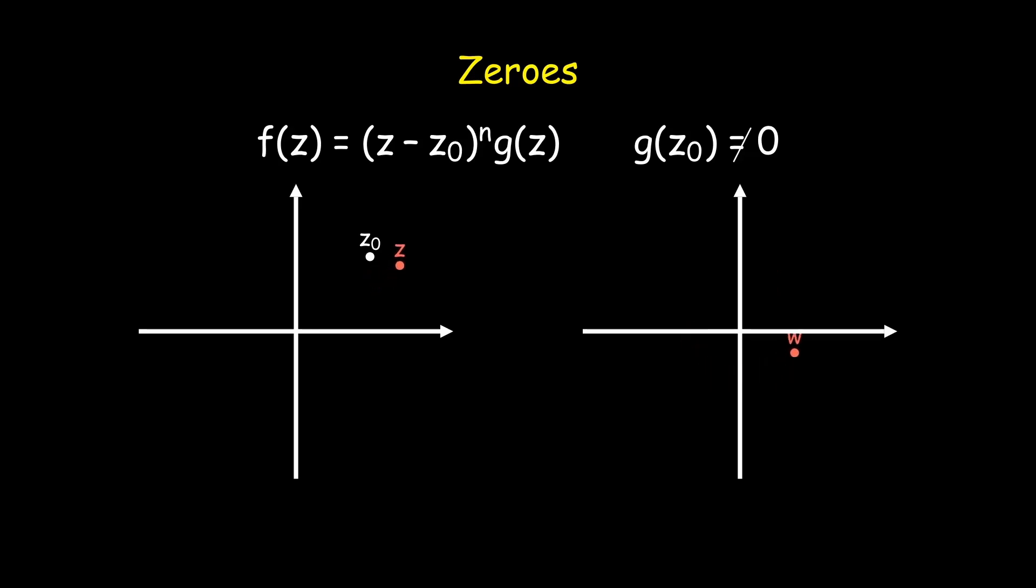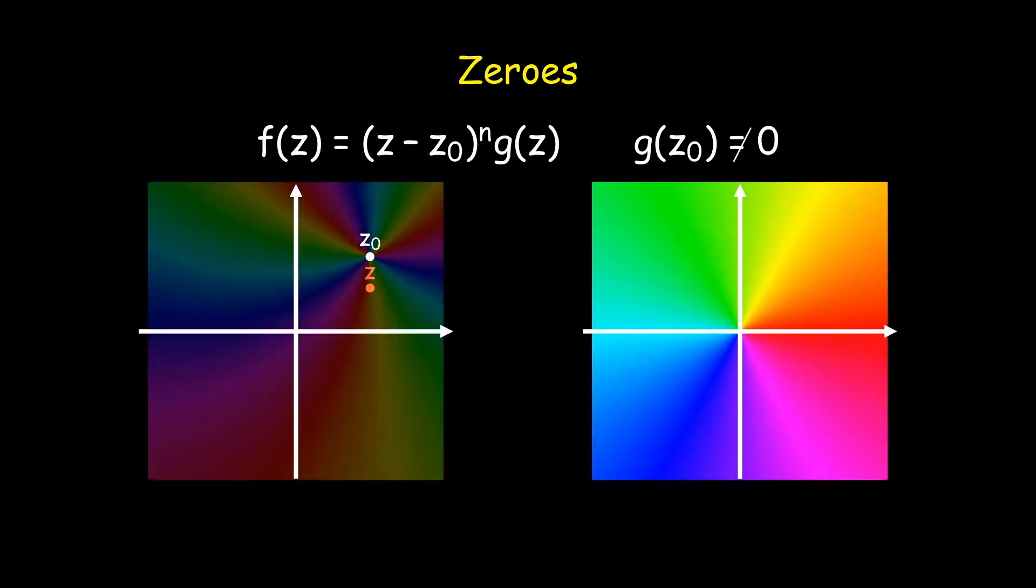If z moves in a small circle around z₀, then g is nearly constant, and f behaves like (z - z₀)ⁿ. Therefore, the function value w moves n times around the origin. Thus, a phase portrait is created at z₀, where all colors converge n times.